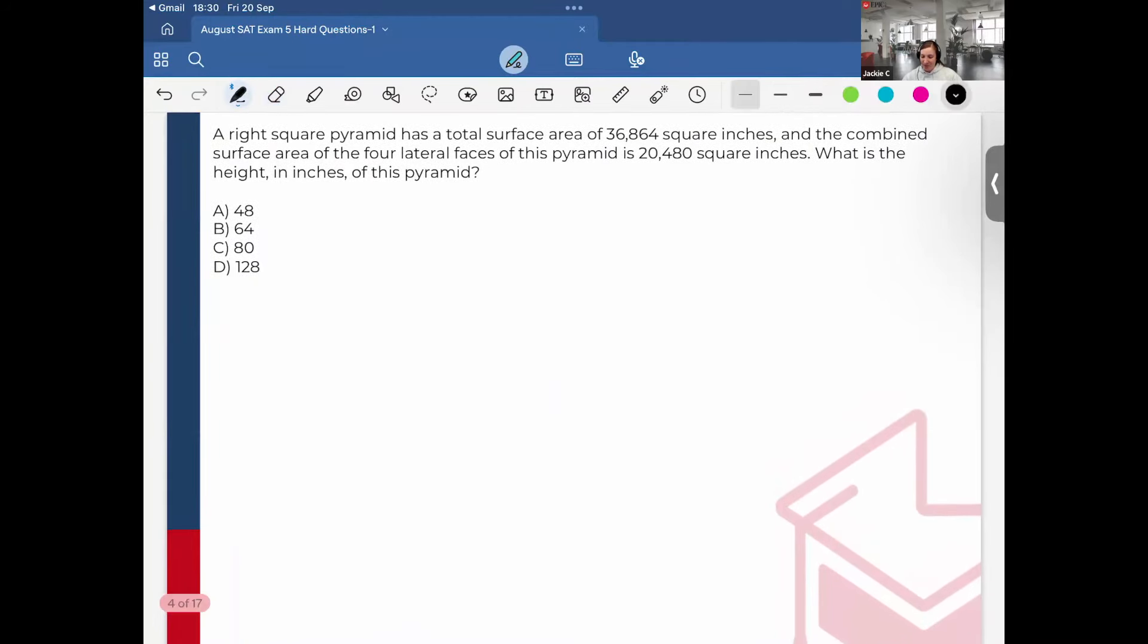A right square pyramid has a total surface area of 36,864 square inches and the combined surface area of the four lateral faces of the pyramid is 20,480 square inches. What is the height in inches of this pyramid? It's important that it tells us it's a right square pyramid which means that the base is a square. This is what it looks like in 3D, and imagine if you were to fold out all the sides, the lateral faces of the pyramid, it would look like this.